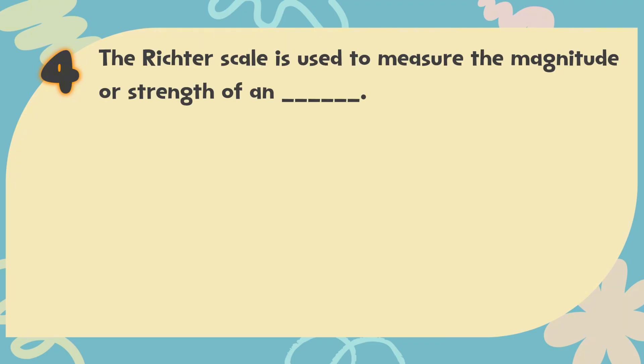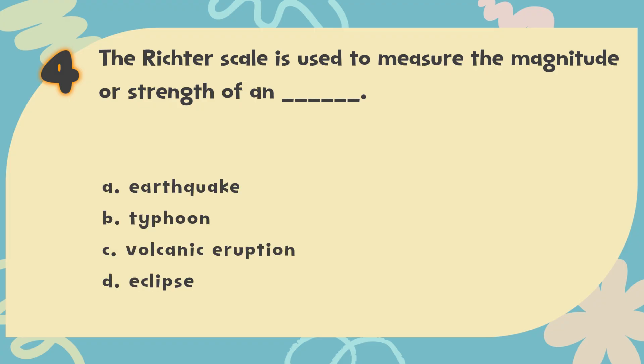Number 4: The Richter scale is used to measure the magnitude or strength of a blank. The choices are: A. Earthquake, B. Typhoon, C. Volcanic eruption, D. Eclipse.